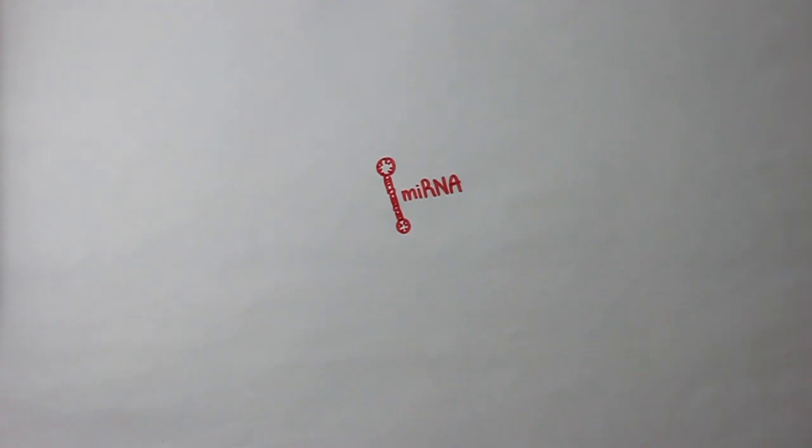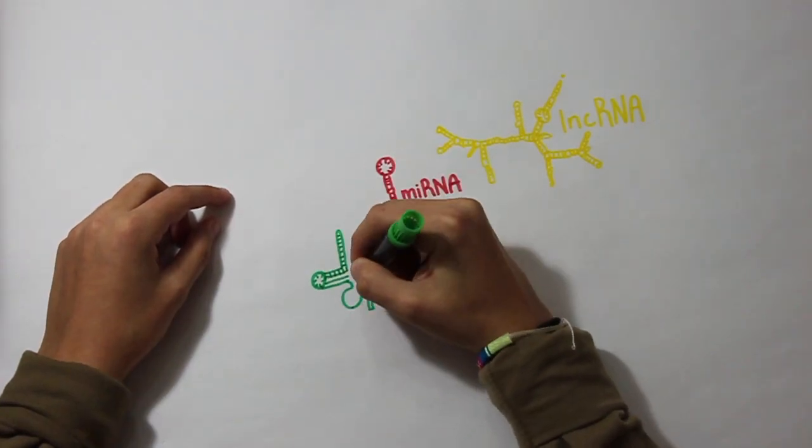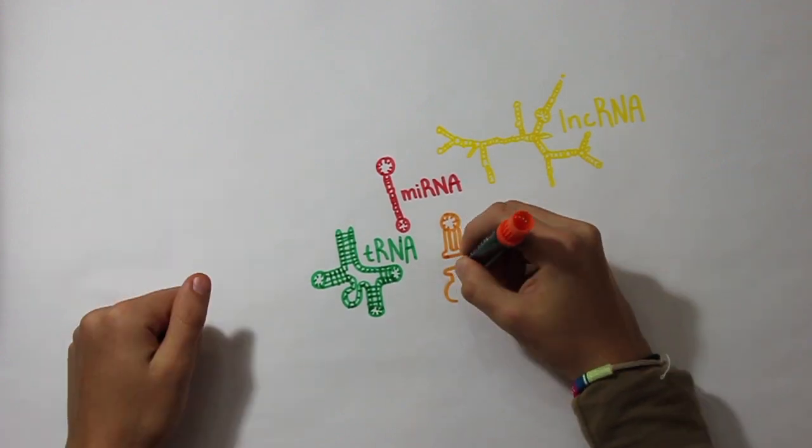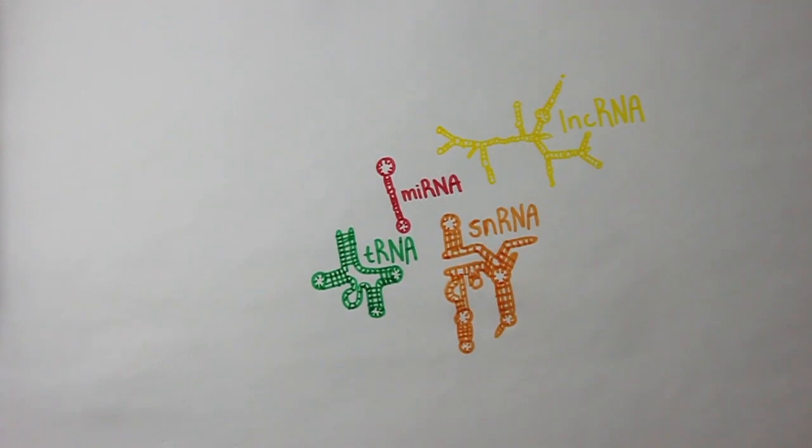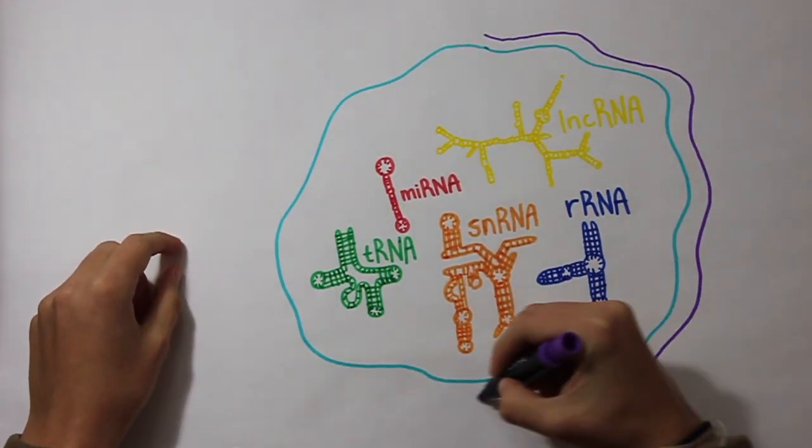There are multiple types of non-coding RNAs, such as miRNAs, lncRNAs, snRNAs, tRNAs, and rRNAs. Each of these have a different function inside a cell.